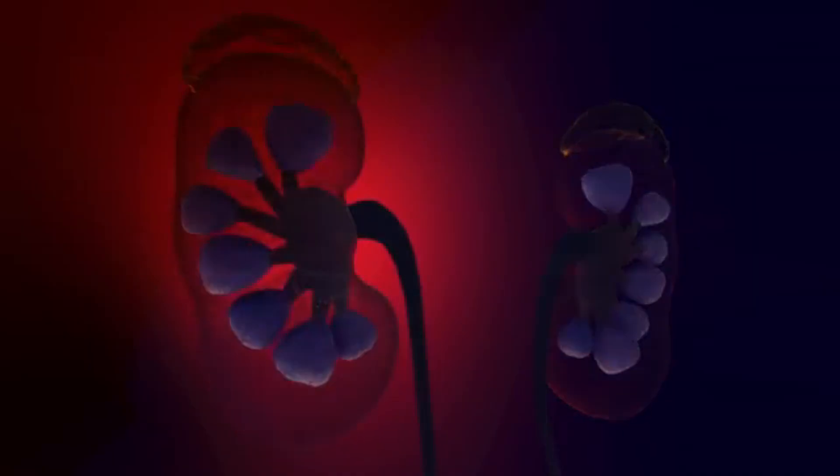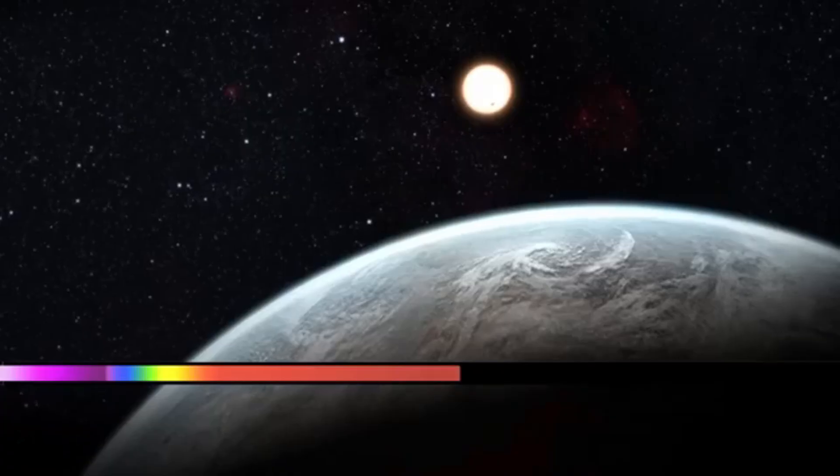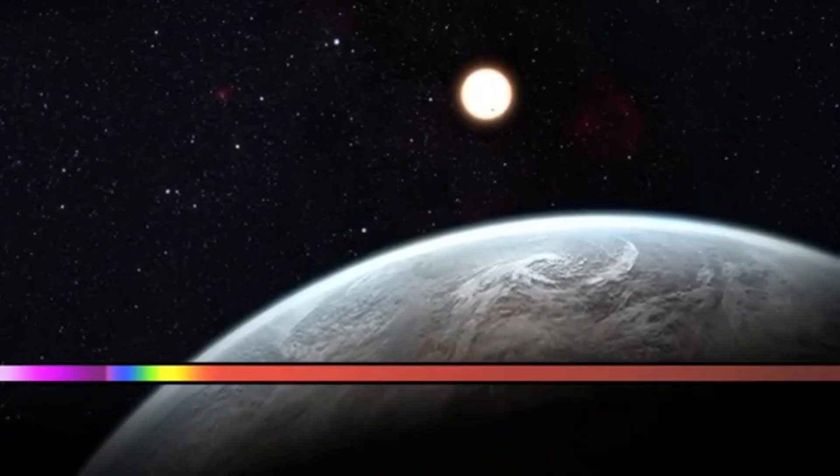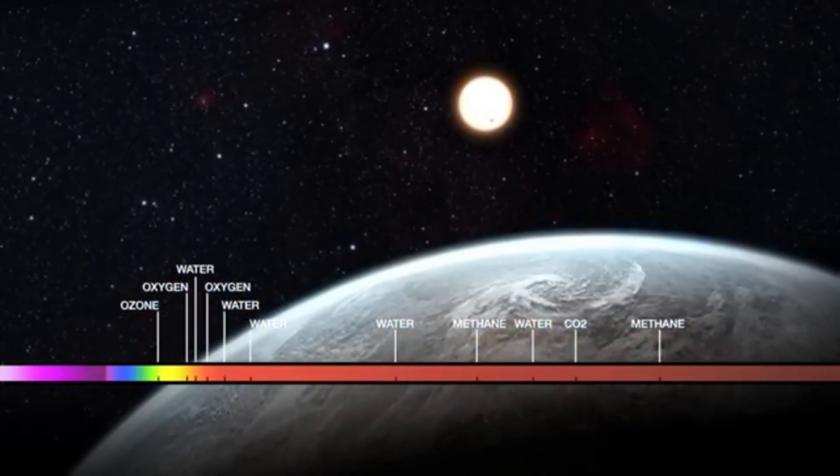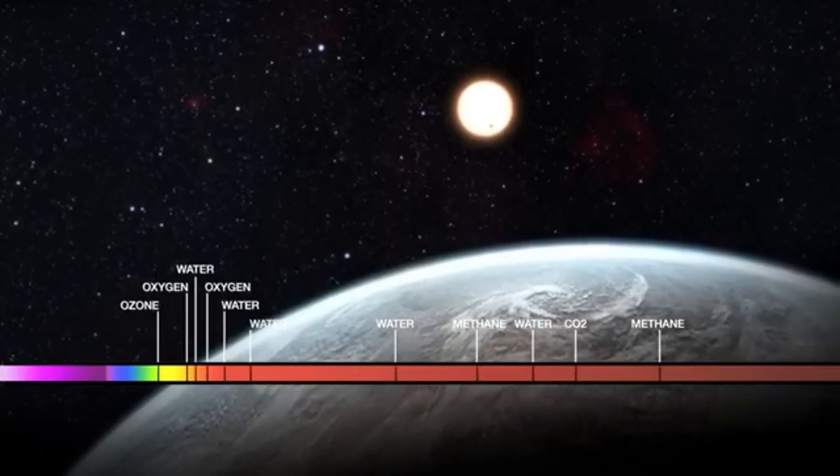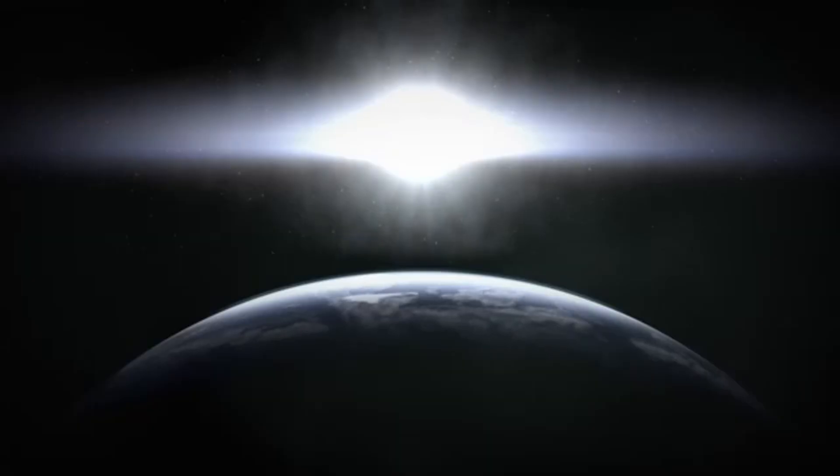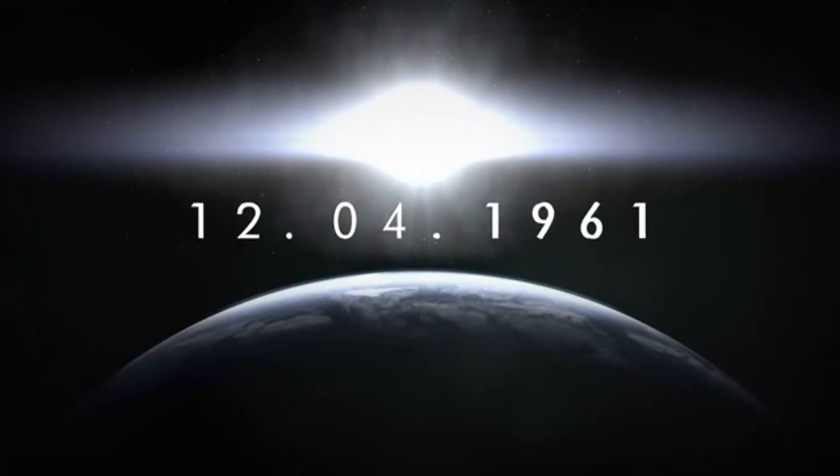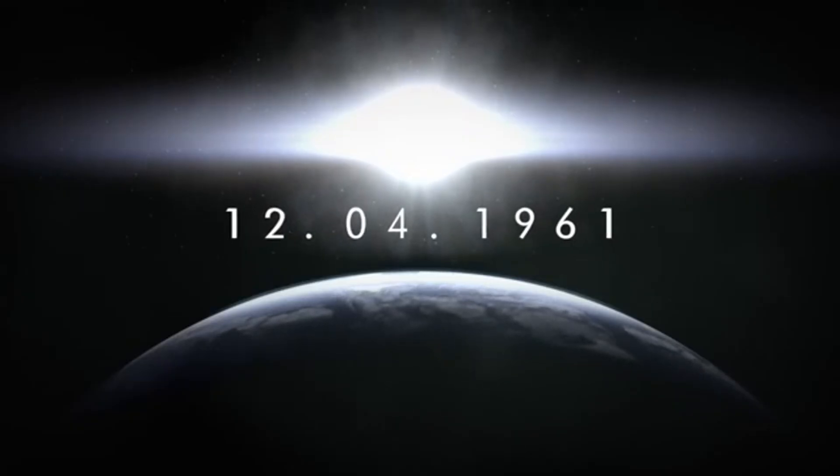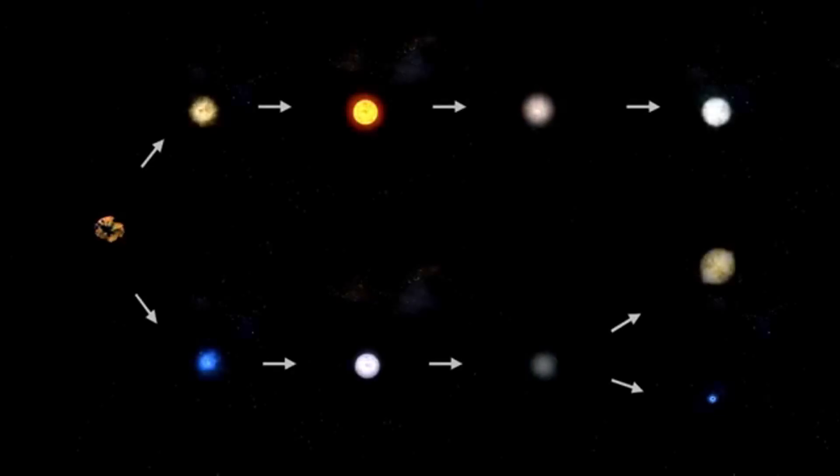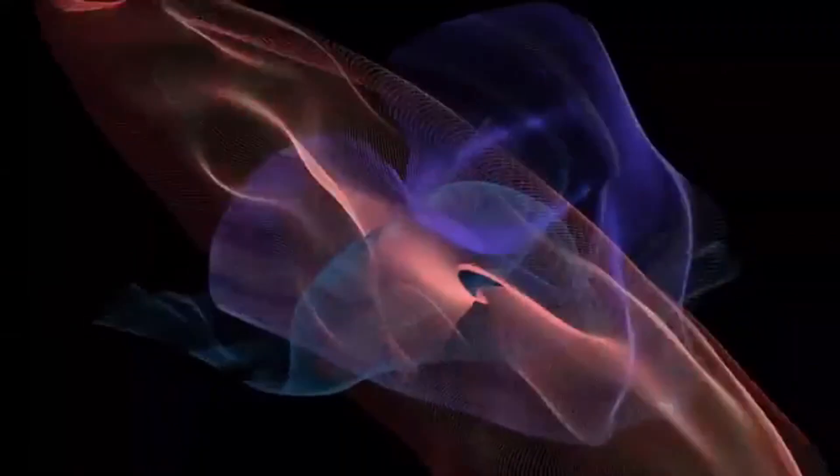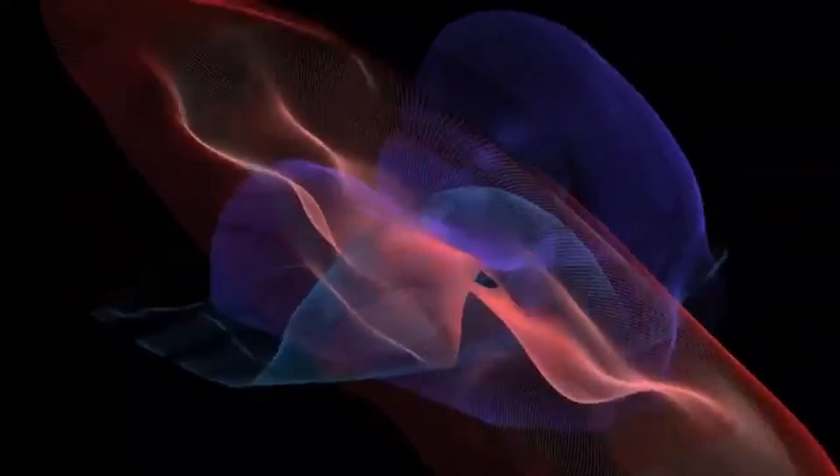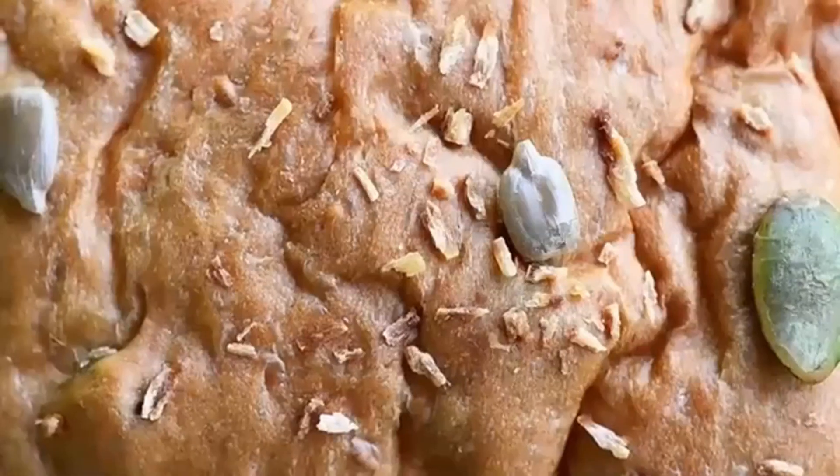But here's where it gets personal. When Webb spots a dusty region like NGC 346 teeming with new stars and maybe planets, it's not just about the past. It's about us. If planets formed so early, life might have had billions more years to evolve elsewhere. Imagine civilizations on worlds older than Earth, watching their own skies, asking the same questions we do. Or maybe they're long gone, their stories etched in the light Webb's catching now. Either way, it makes you wonder, are we alone or just one note in a cosmic symphony?